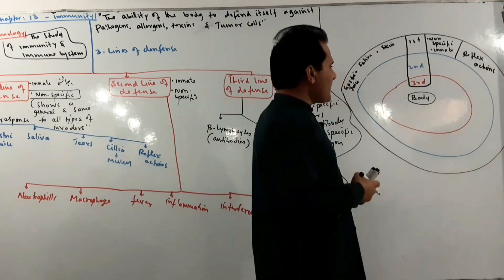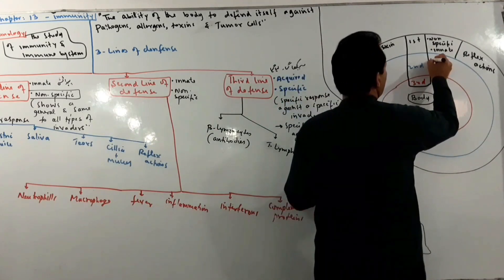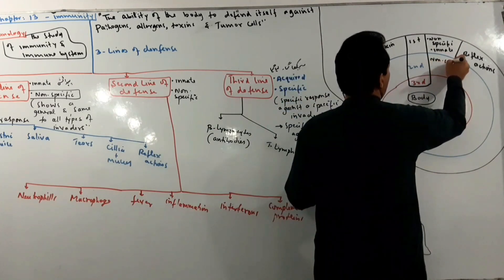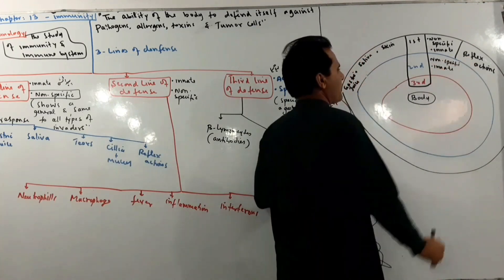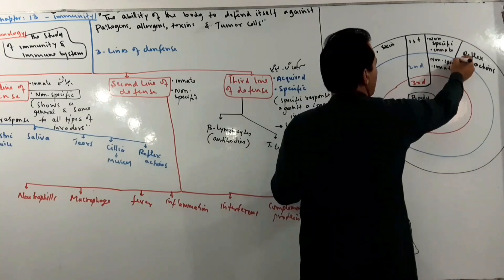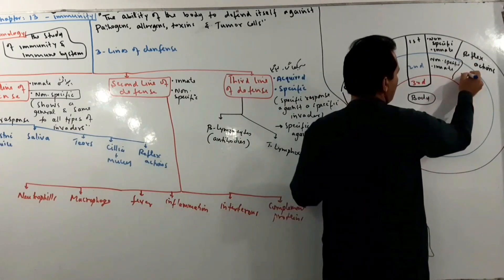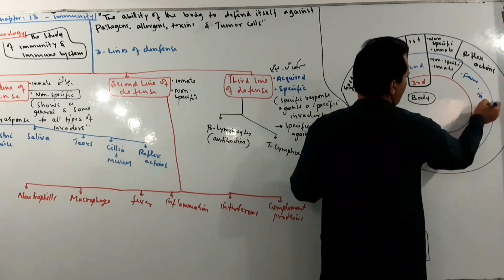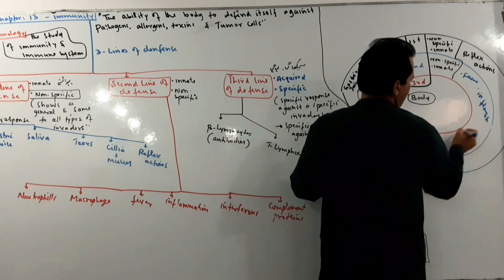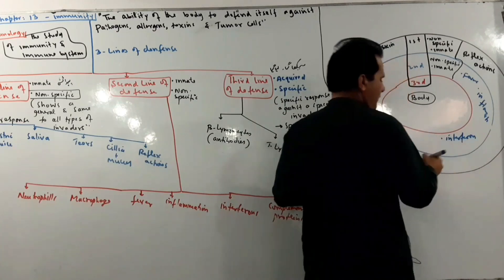The second line of defense is non-specific. Another property is that it is innate. Components include fever, inflammation, interference, proteins, and white blood cells — especially effective against viruses.